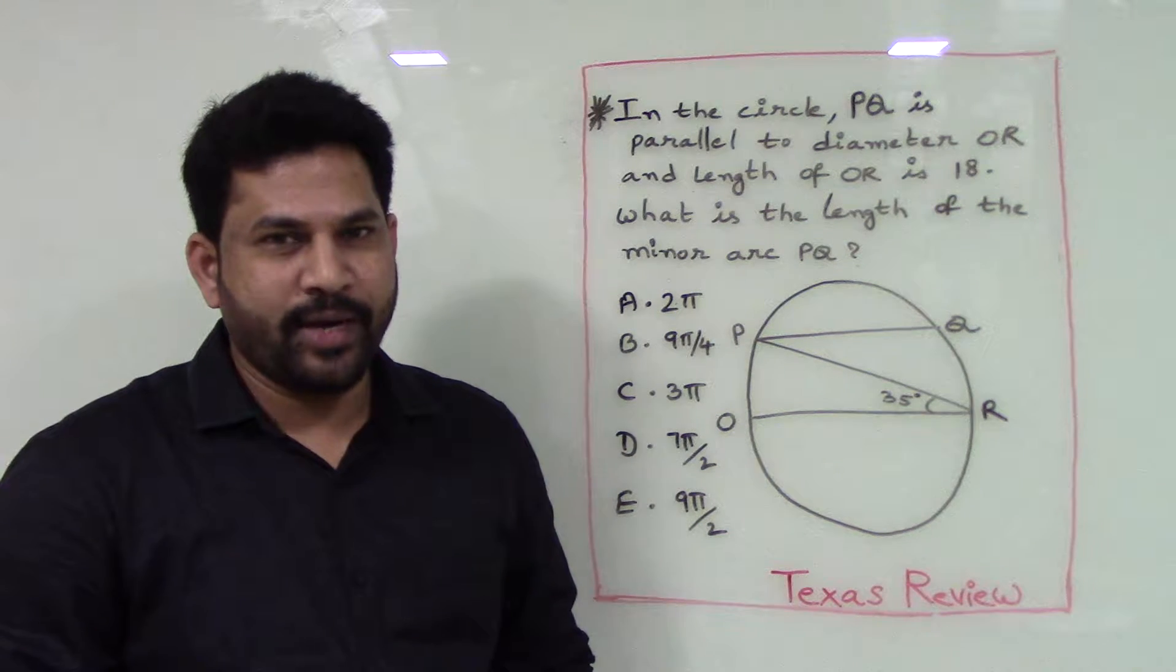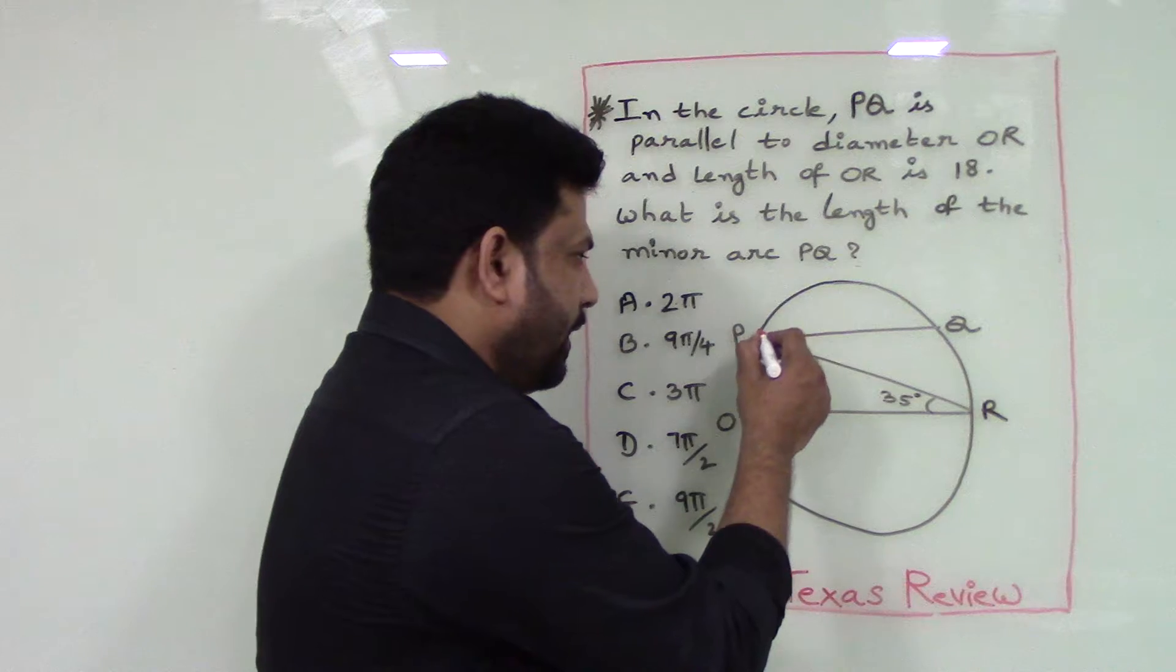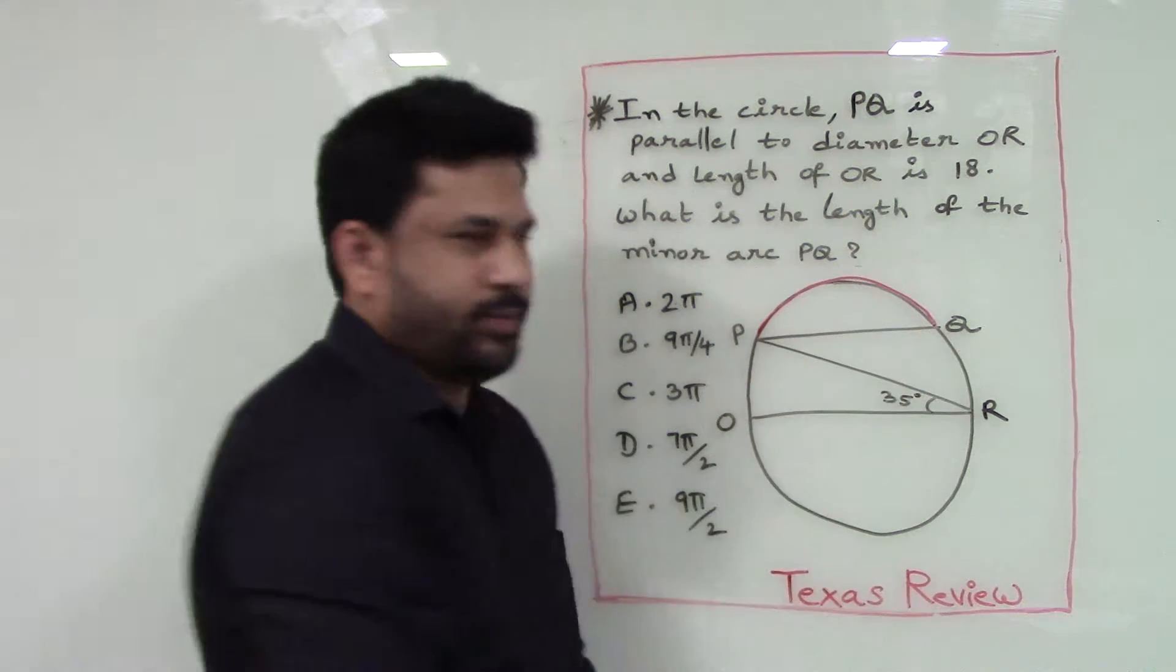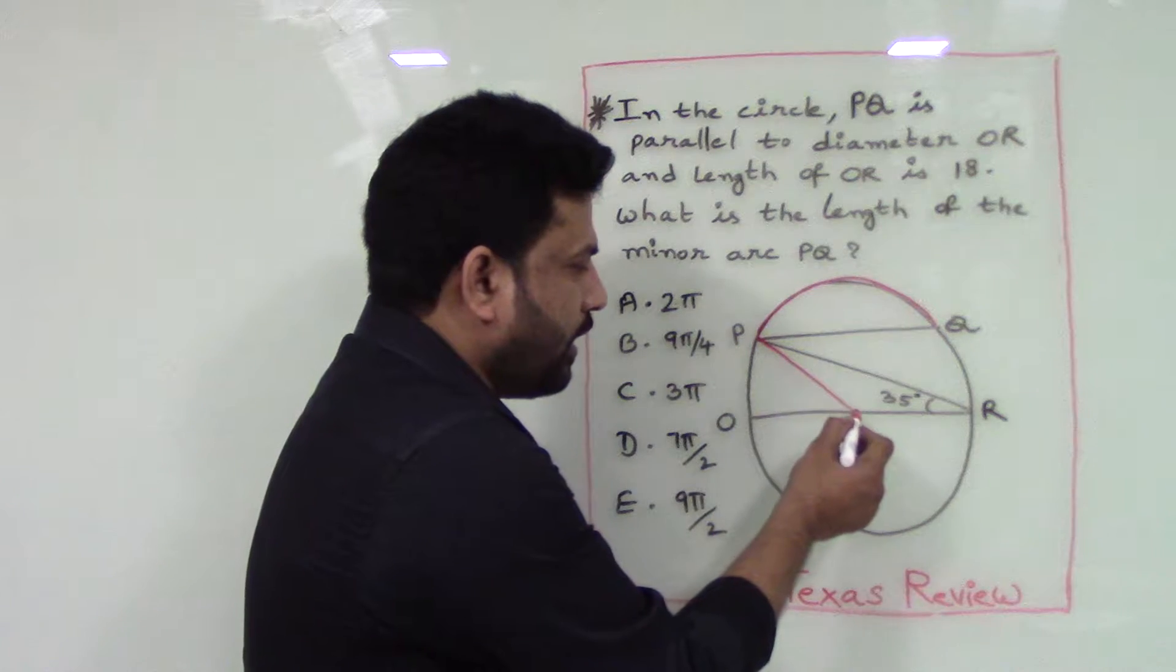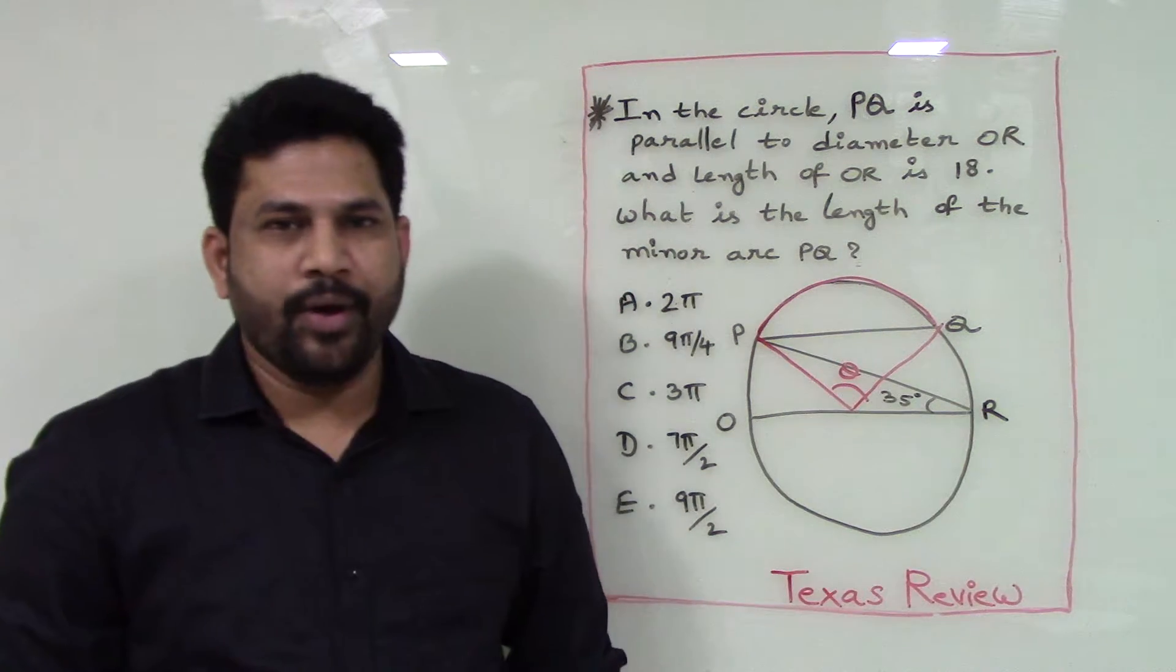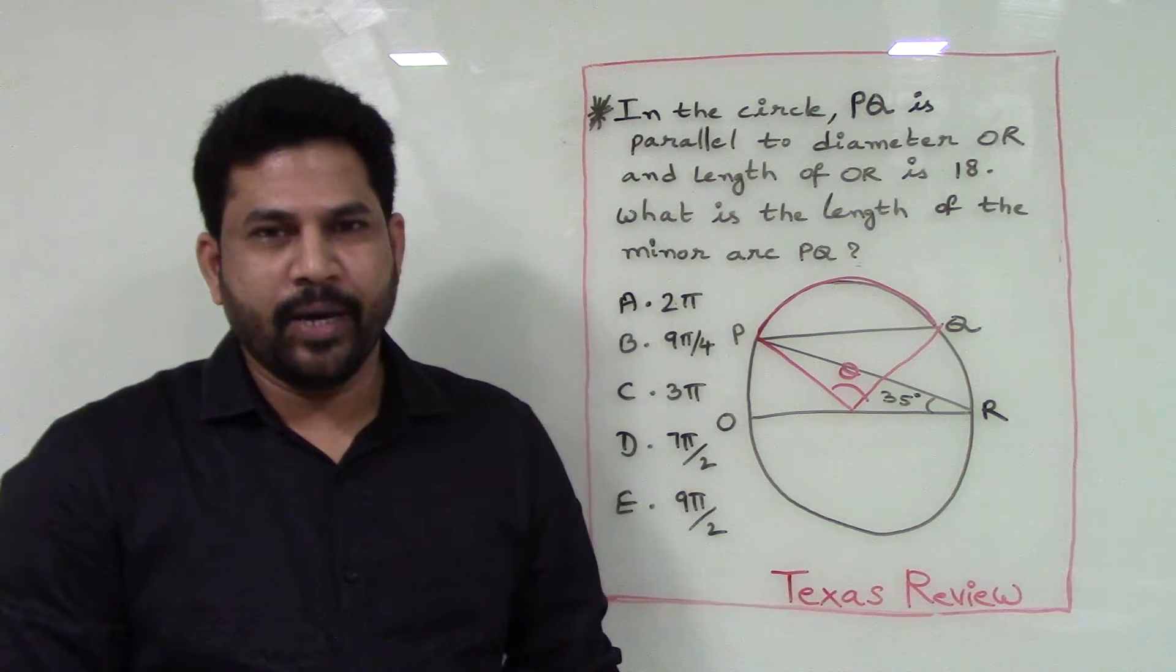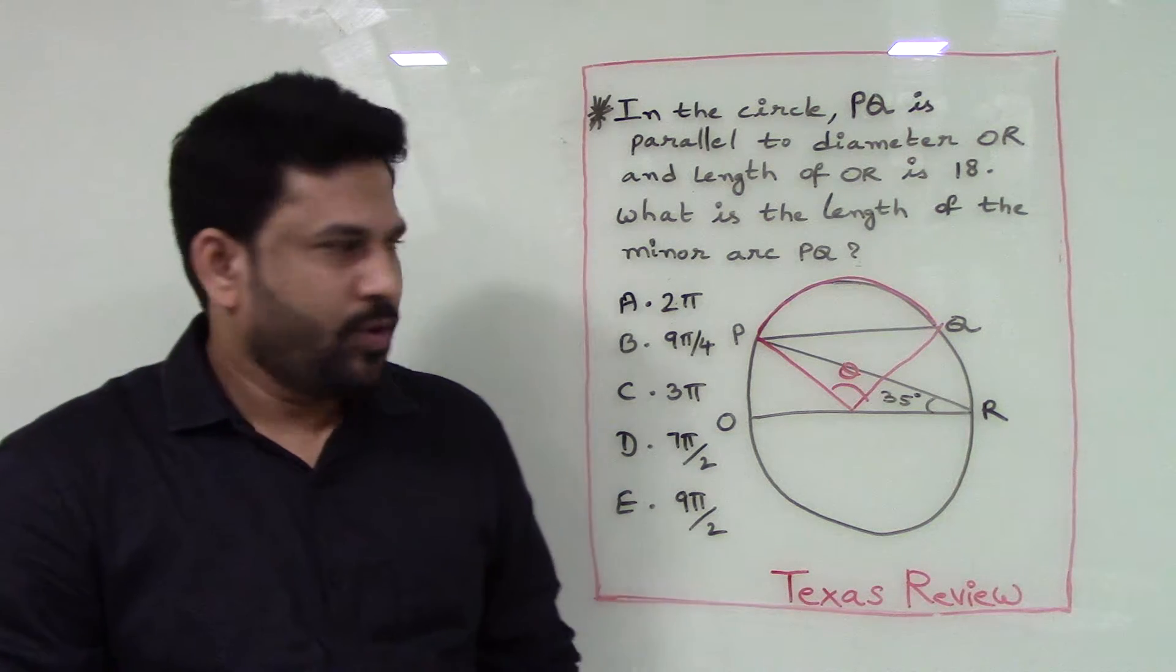We are asked to calculate the length of the minor arc PQ. To calculate this length, we need the angle made by the arc at the center of the circle. Now how do we find the angle made by PQ at the center of the circle?